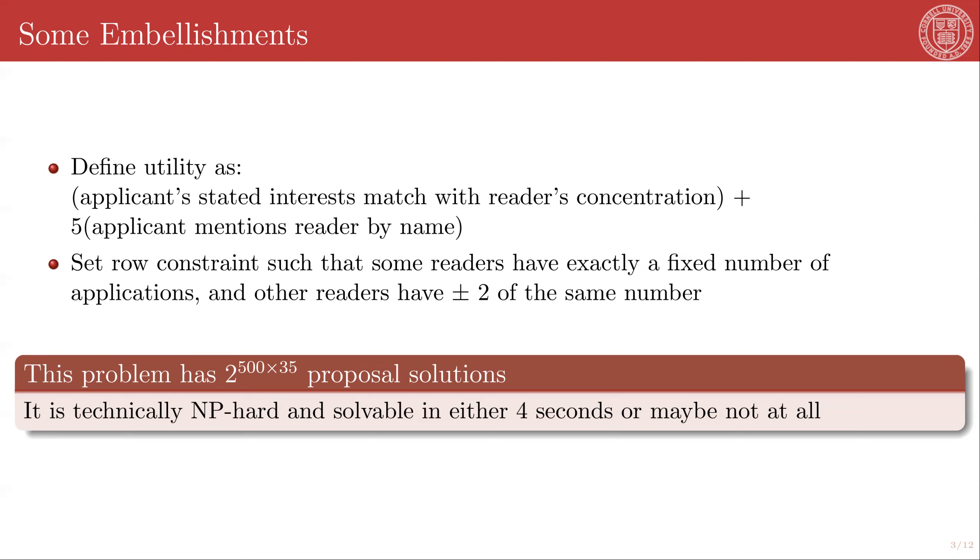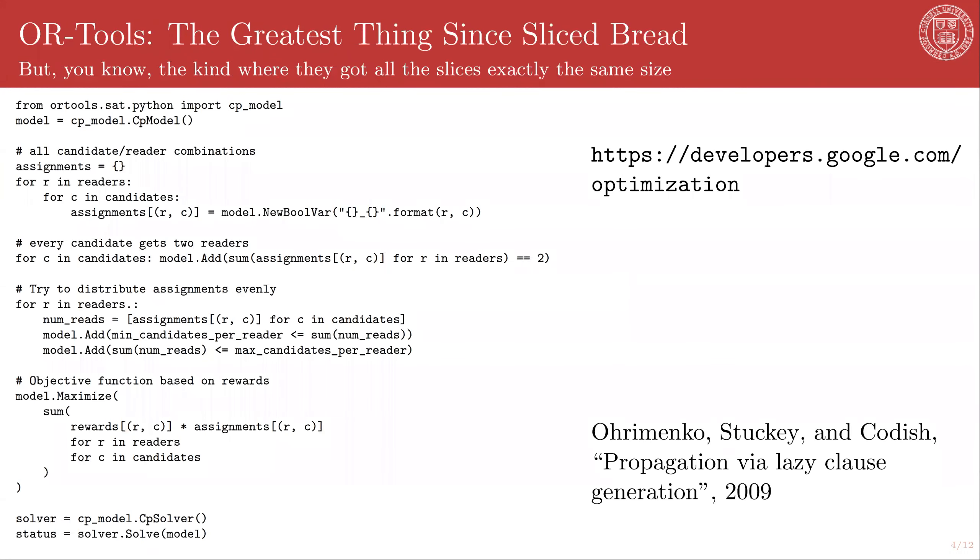And the particular tool that I chose to use for this is something called OR-tools, which is a combinatorial optimization suite produced by Google, and released as open source. This is, in fact, the entire program. I'm skipping the pre-processing material where I enumerate the readers, so I have an array of readers, I have an array of candidates, and I've also pre-computed that rewards function that I defined in a previous slide. But other than that, that's like another 10 lines of Python, this is it. This is the whole thing. And four seconds later, on the same laptop that I'm using to speak to you right now, this spits out a provably optimal solution to my stated problem.